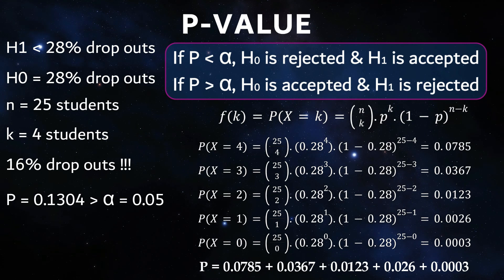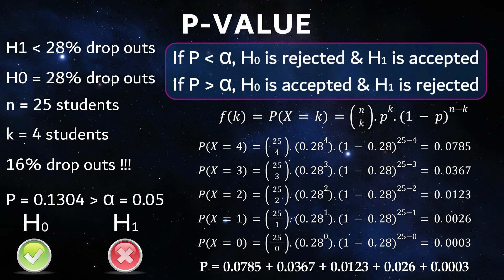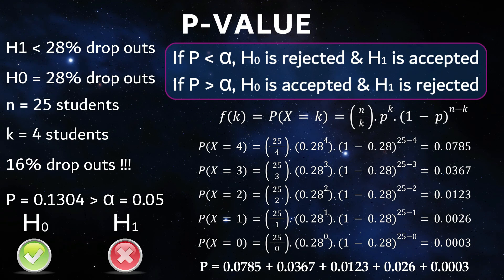We cannot therefore reject the zero hypothesis for the time being, since we cannot say with sufficient certainty that our measured result came about through the measure individual study counseling instead of by chance.